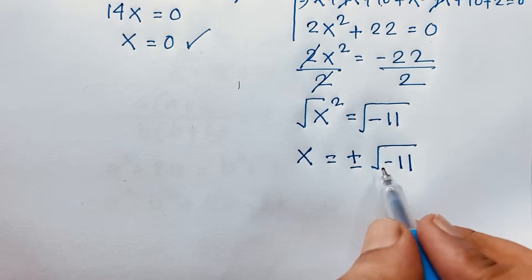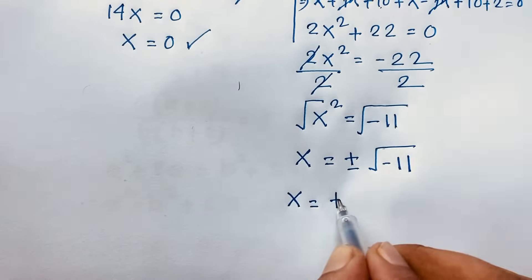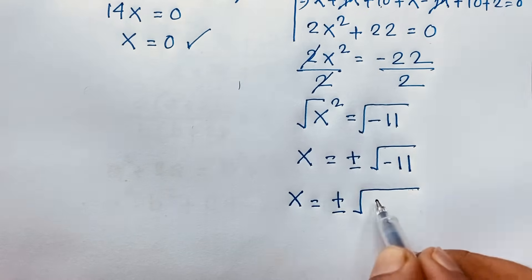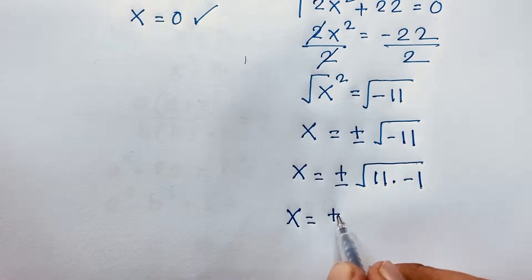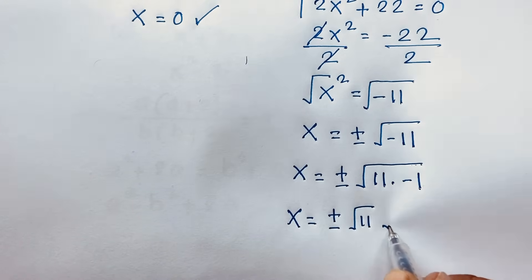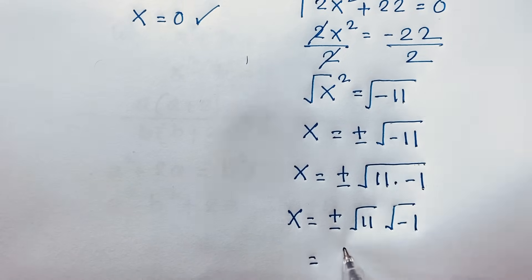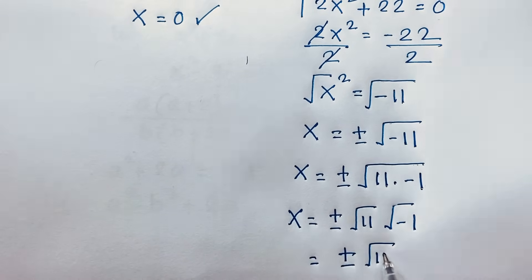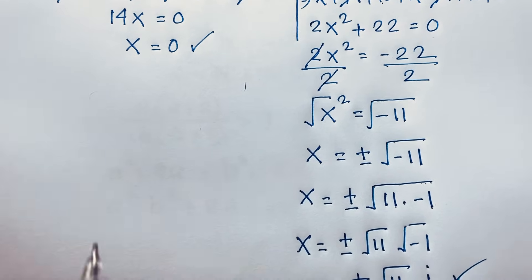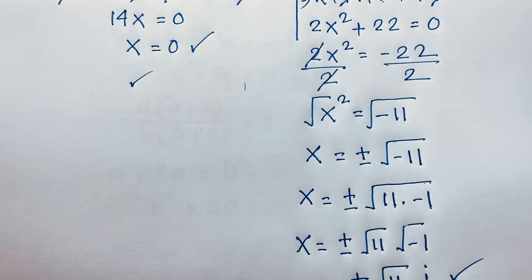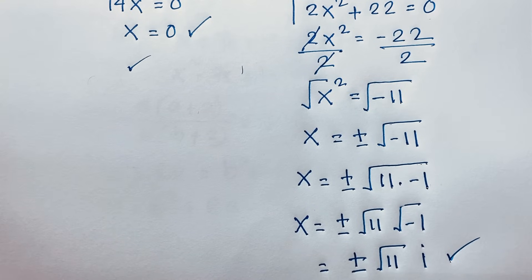So x = ±√(11 × (-1)) = ±√11 · √(-1) = ±i√11. So our two complex solutions are x = ±i√11, and x = 0. These are our final answers to this Math Olympiad question. Thank you all — if you enjoyed this, please subscribe for more interesting videos. Goodbye, take care!